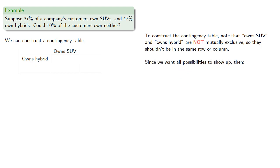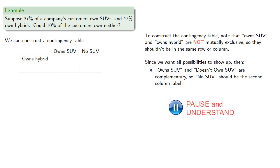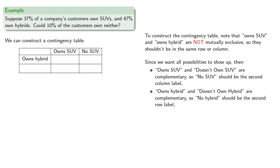Now, since we want all possibilities to show up, then owns SUV and doesn't own SUV are complementary, so no SUV should be the second column label. And similarly, owns hybrid and doesn't own hybrid are complementary, so no hybrid should be the second row label. And again, it's convenient to extend to a totals column and row.